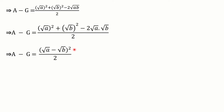The square root of any quantity is always positive, so we can say the numerator is positive. When a positive numerator is divided by a positive denominator, the whole fraction is again a positive quantity. So we can say that A - G is positive, meaning A - G > 0. It implies A is greater than G, which was the first part to be proved.